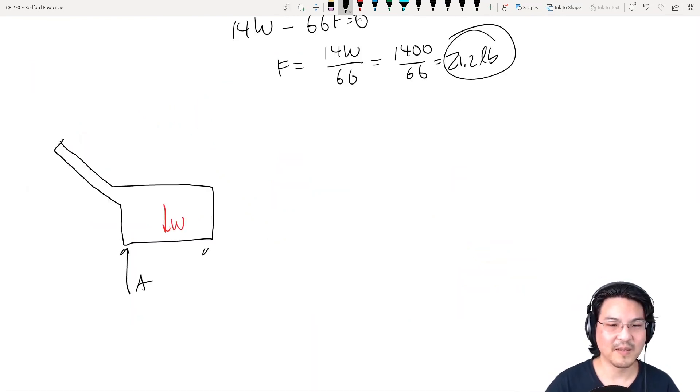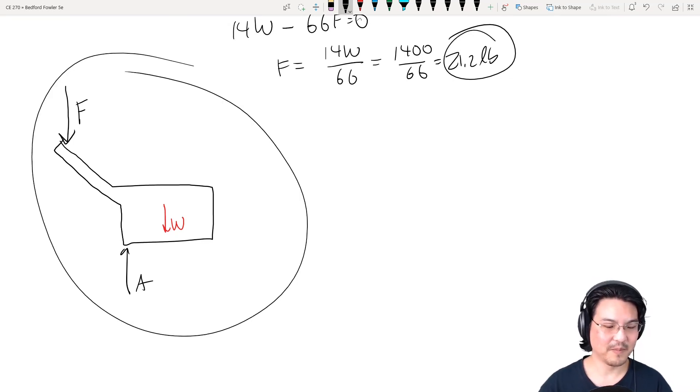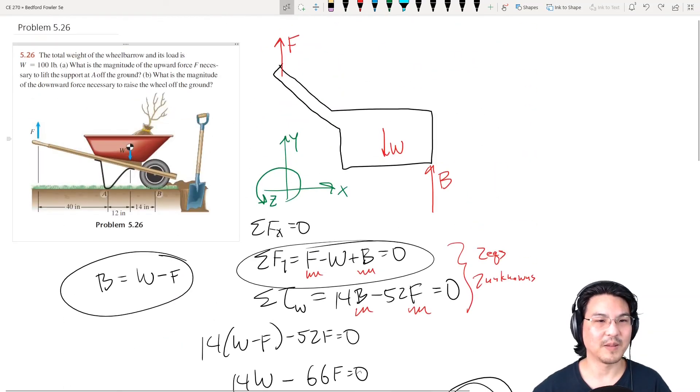This support at A, at B. But then if we apply a force this way, and we lift B off the ground, then B becomes zero. So then this is our free body diagram. Let me take this picture.